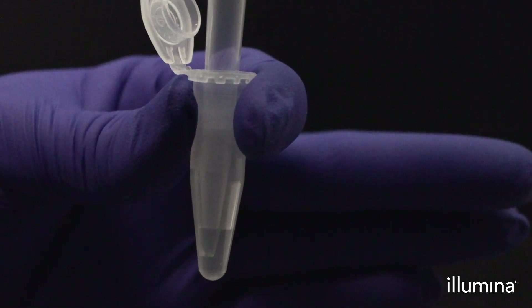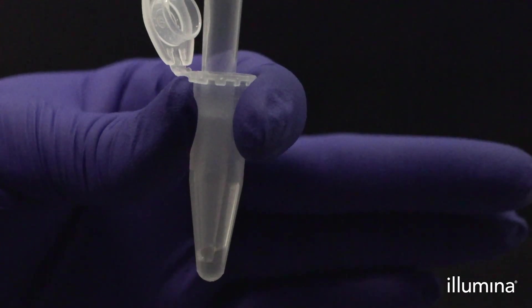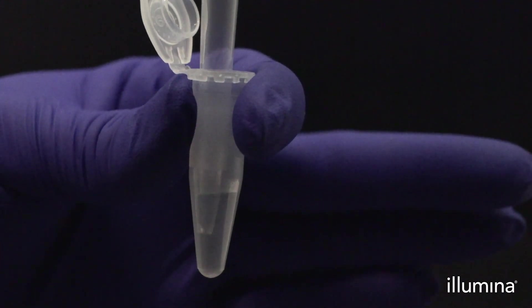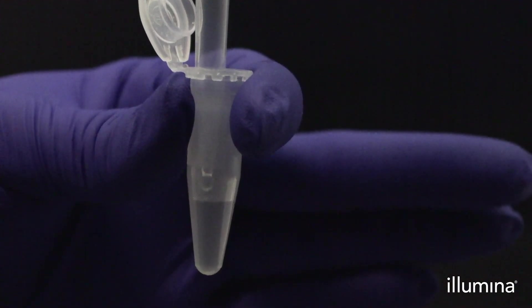First, gently pipette mix your cell or nuclei suspension 10 times with a wide-bore P200 pipette tip. The cell or nuclei suspension should be freshly mixed before transferring into the pips to prevent settling from impacting your sample loading.